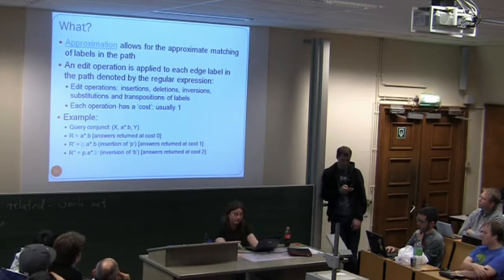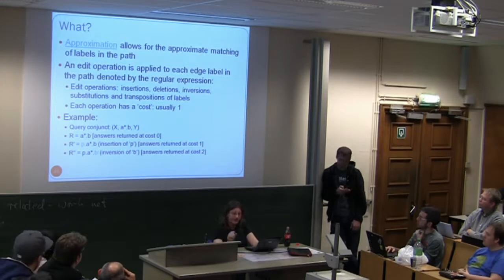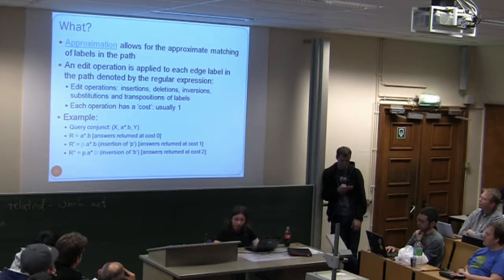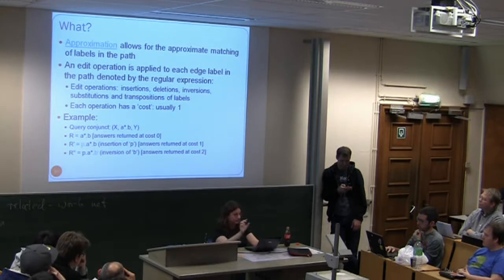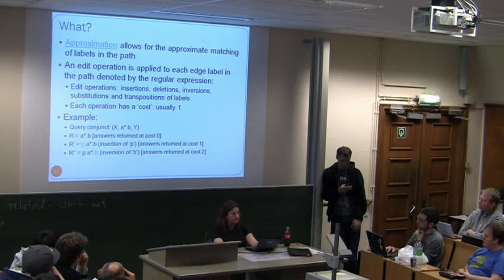An example to illustrate: R is expressed by zero or more A's followed by B. Answers matching this exactly are returned as an exact match. However, if we insert label P in front of A*B, answers matching that pattern are returned at cost 1. If we then invert B and add that, answers matching that expression are returned at cost 2.